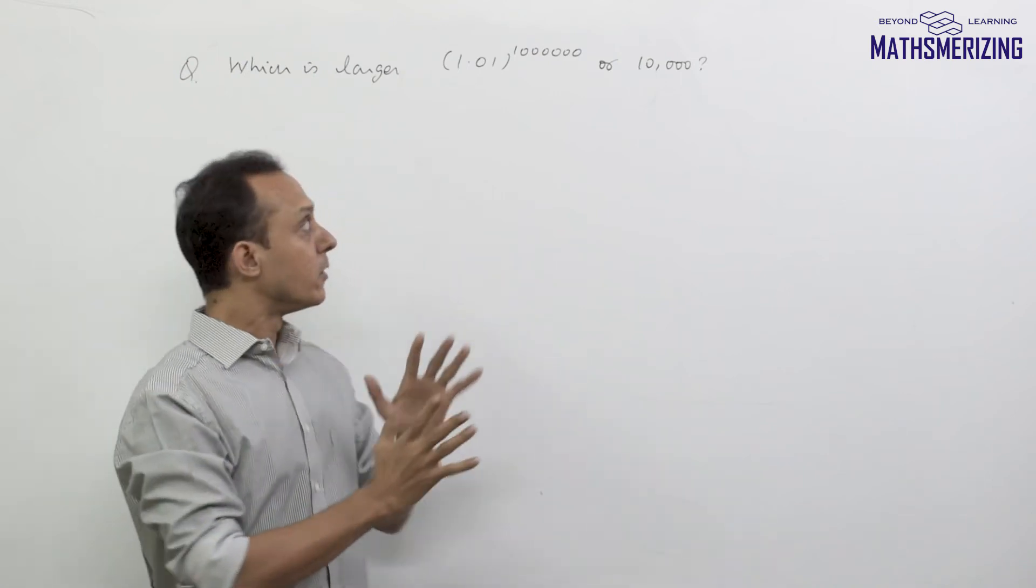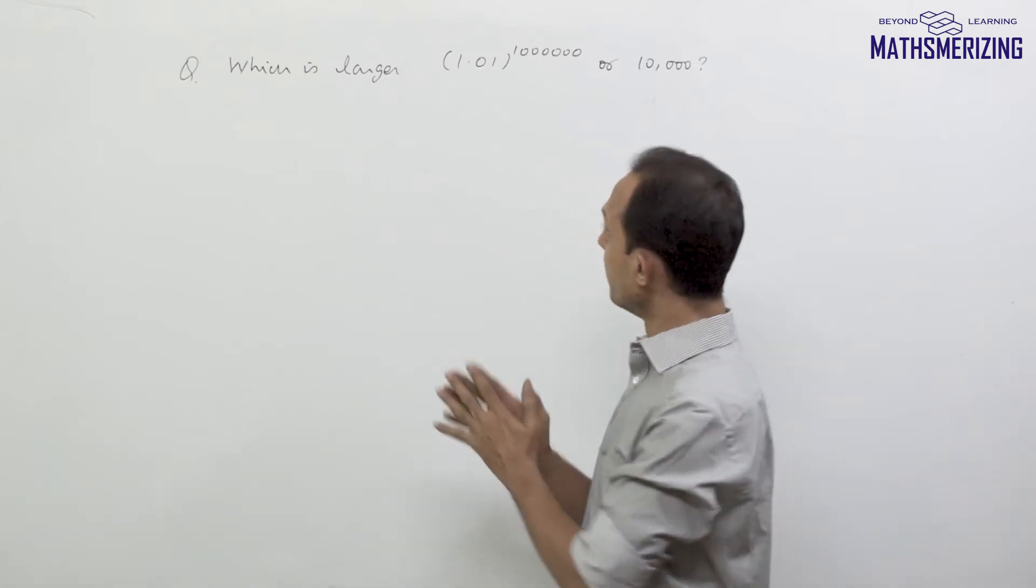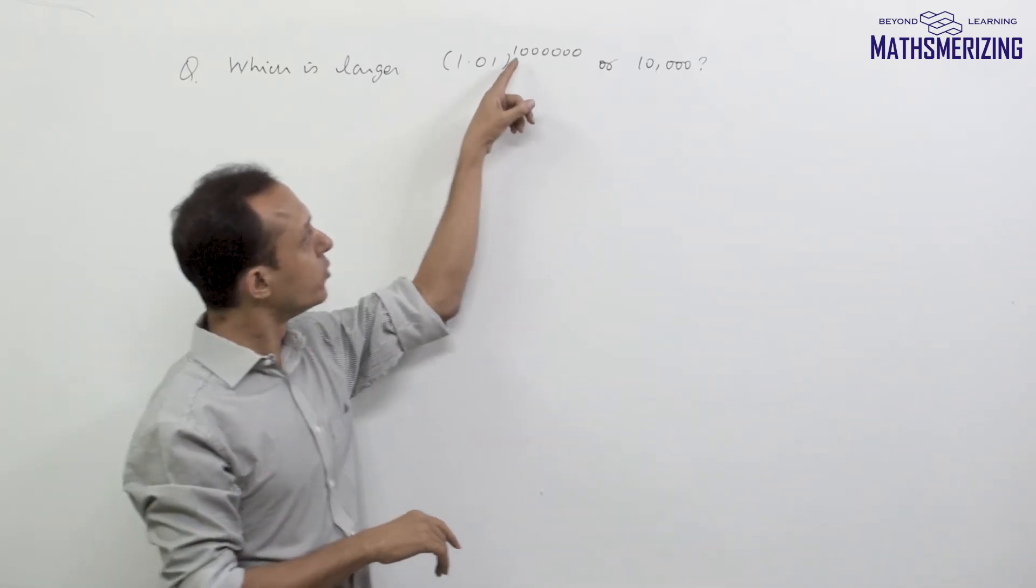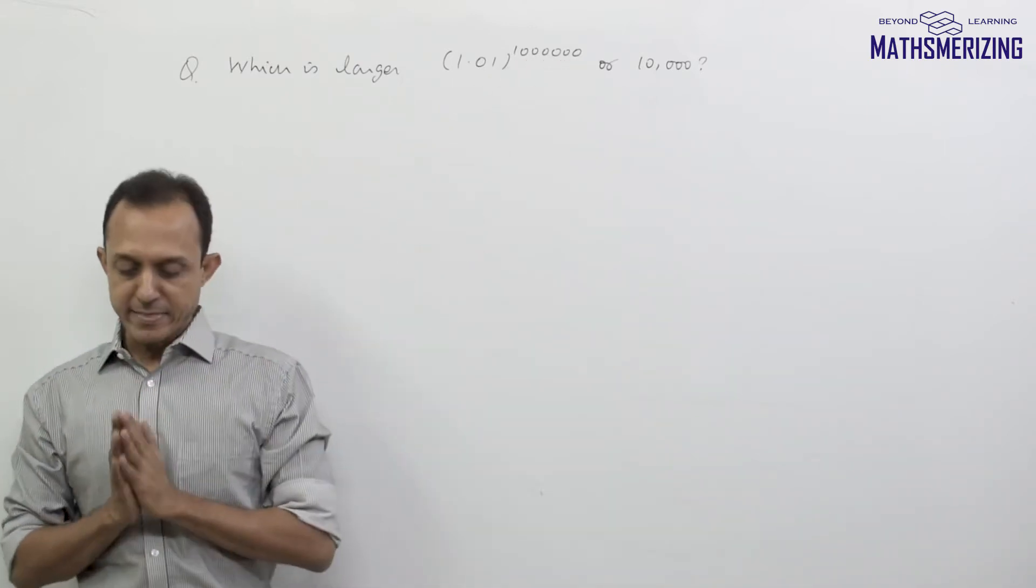One of the uses of the binomial theorem is to compare two numbers. For example, a question is given: which is larger? One number is 1.01 to the power 1,000,000, and another number is 10,000.